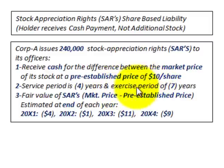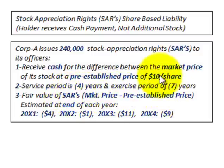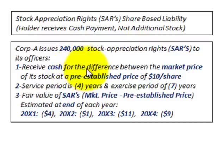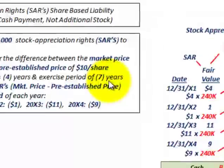The officers have up to seven years to exercise these rights, but the required service period is four years. The fair value of each SAR is the difference between the market price and the pre-established price of $10 per share, estimated at the end of each year: 20X1 = $4, 20X2 = $1, 20X3 = $11, and 20X4 = $9. This is a stock-based compensation plan where officers receive cash, not stock.